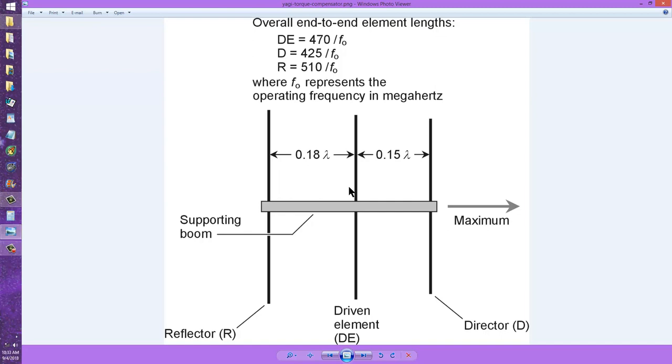But that, ladies and gentlemen of the ham radio world, is basically what a torque compensator is for. Sometimes called a compensator, sometimes called a boom compensator or a Yagi compensator. It minimizes the tendency of the antenna to want to rotate in a gusty wind and thereby minimizes the stress on the rotator.